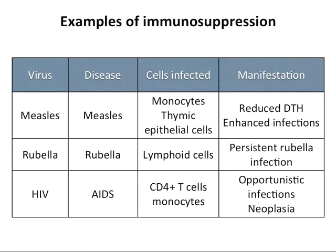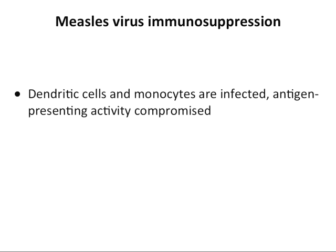Rubella similarly infects lymphoid cells, leading to persistent rubella infection. HIV is the best-known immunosuppressor — it infects CD4-positive T helper cells, destroying the cells needed for maturation of antibody and CTL responses, resulting in opportunistic infections and cancer that ultimately kill the patient. Measles virus immunosuppression also involves dendritic cells and monocytes getting infected directly.